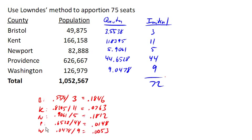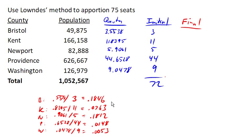We can do that for the rest of the counties. Looking at those ratios, we can complete our final allocation. The first of our three extra seats is going to go to the one with the largest ratio, which in this case is Bristol.